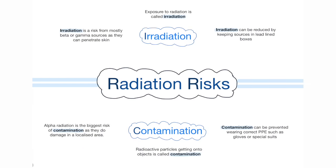Finally, irradiation and contamination. Irradiation is just exposure to radiation, and contamination is when radioactive particles get onto objects. And that sums up all of GCSE Physics Paper 1 in 5 minutes.